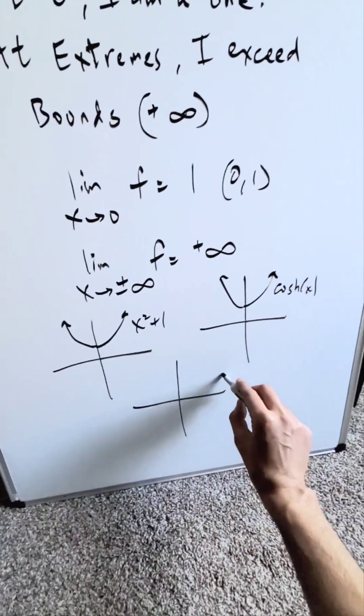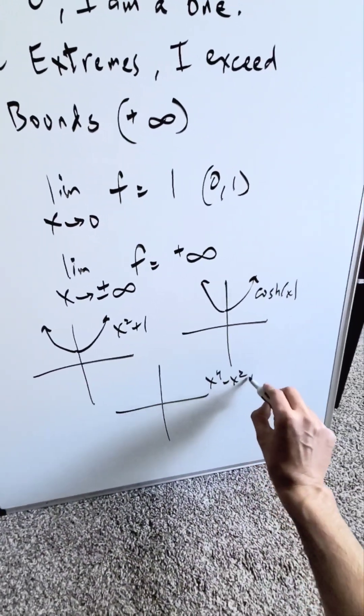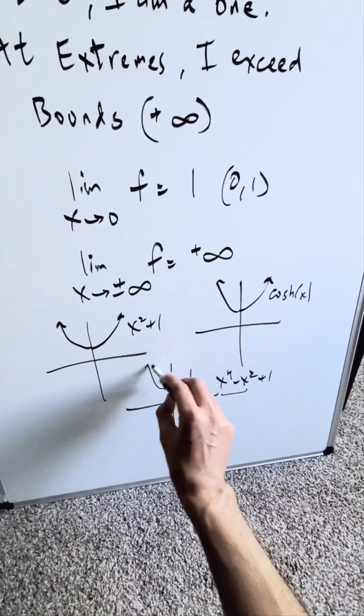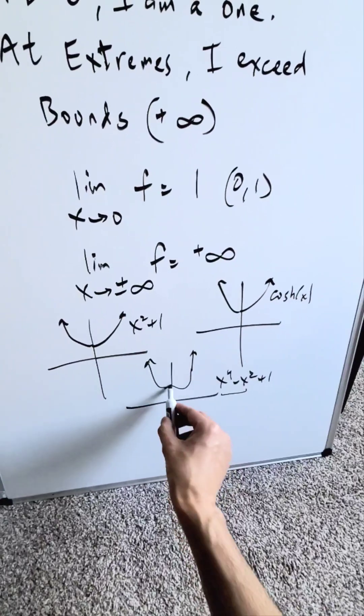You also have this one. It's x to the 4 minus x squared plus 1. This function shifted up one unit, and it would look something like this. And it would have a 0, 1, and would exceed bounds, as you can see.